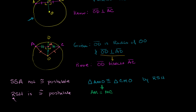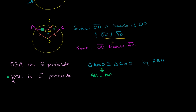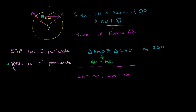Another way we could have proven this without RSH is straight up with the Pythagorean theorem. By setting up those two radii, we already know OA is equal to OC. And we also know that OM is equal to itself.